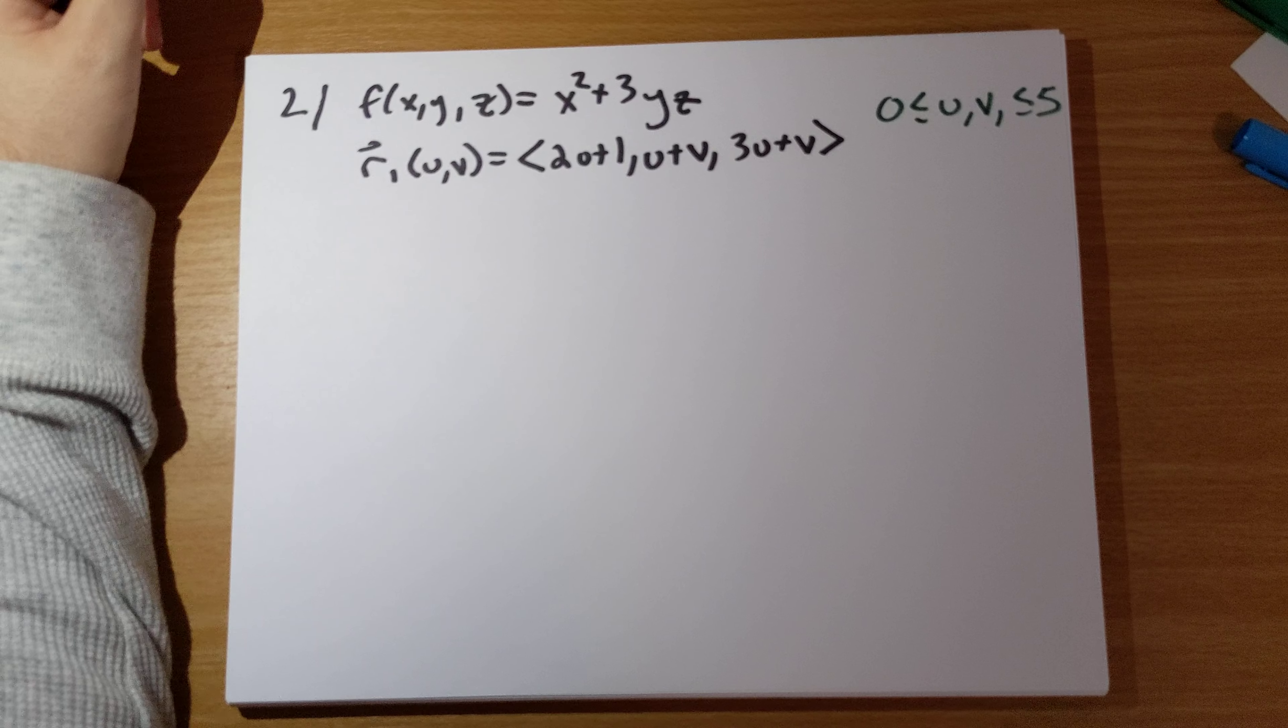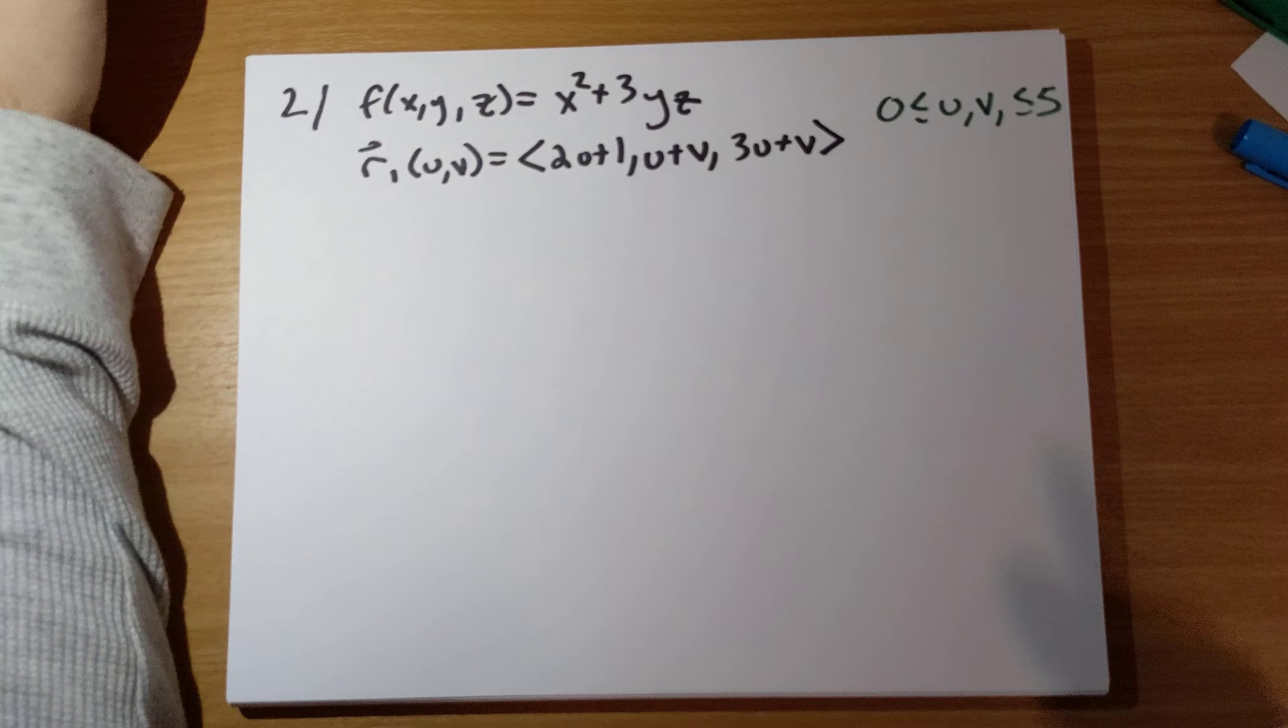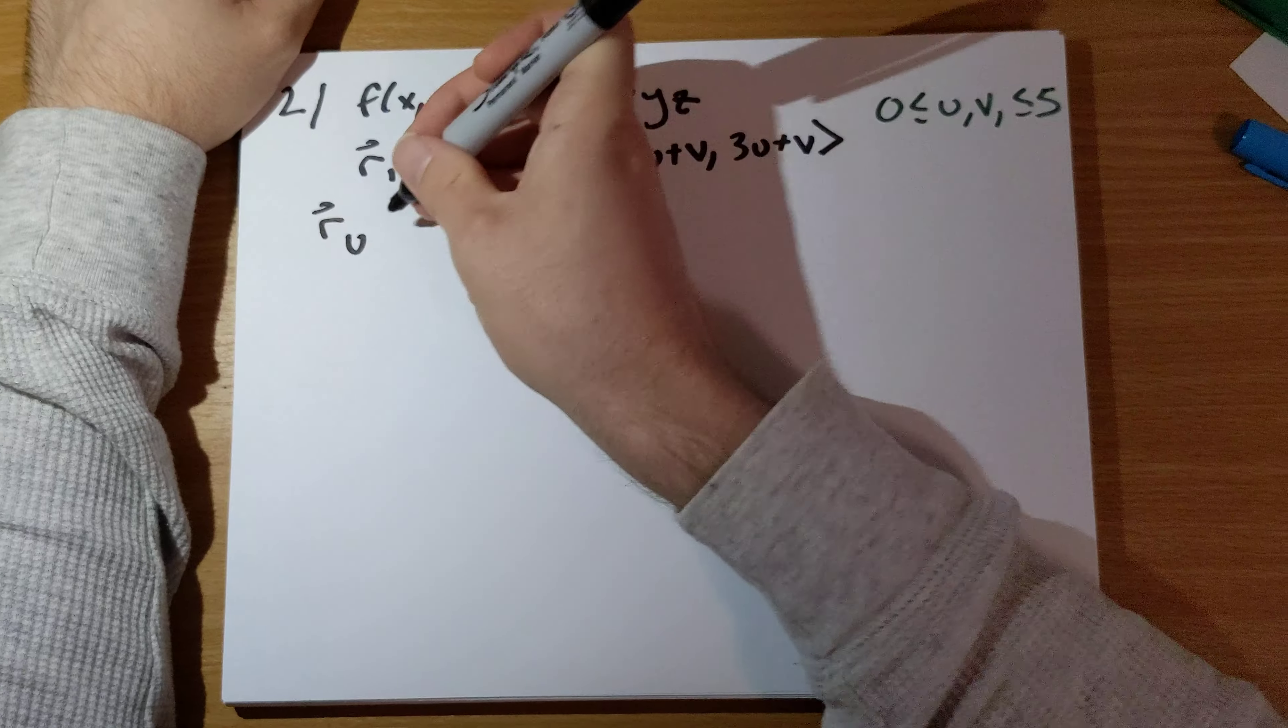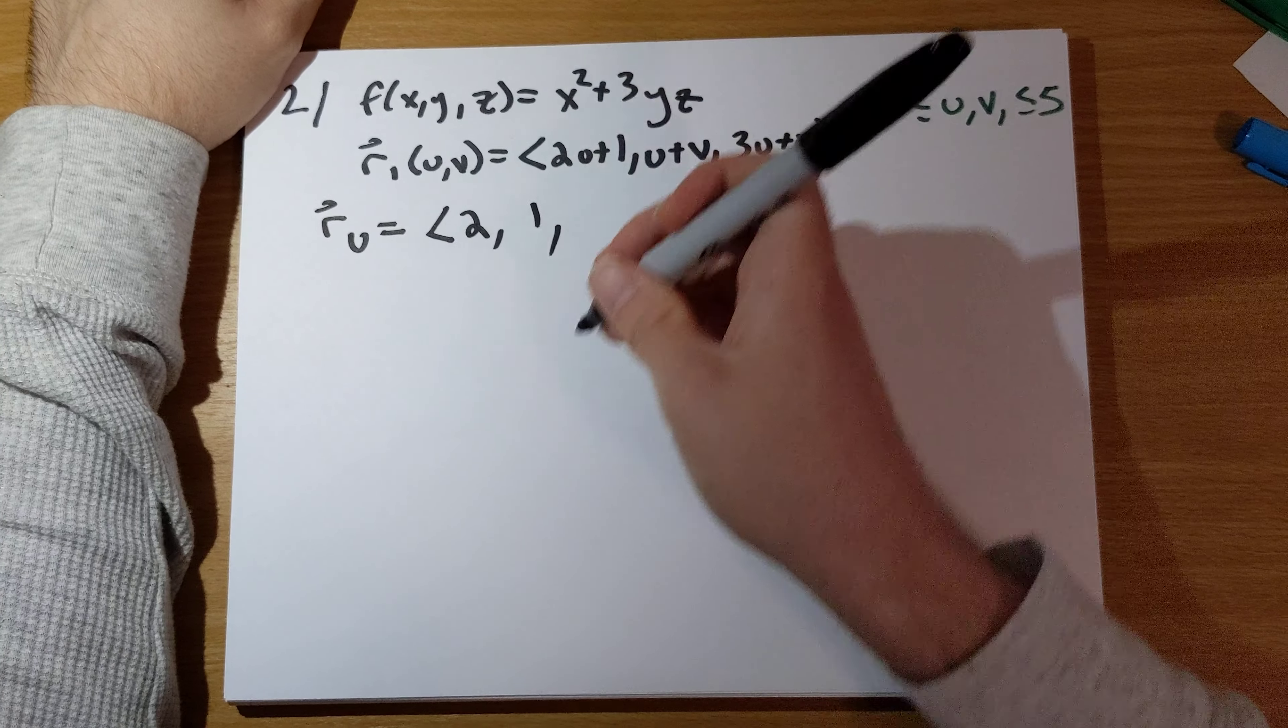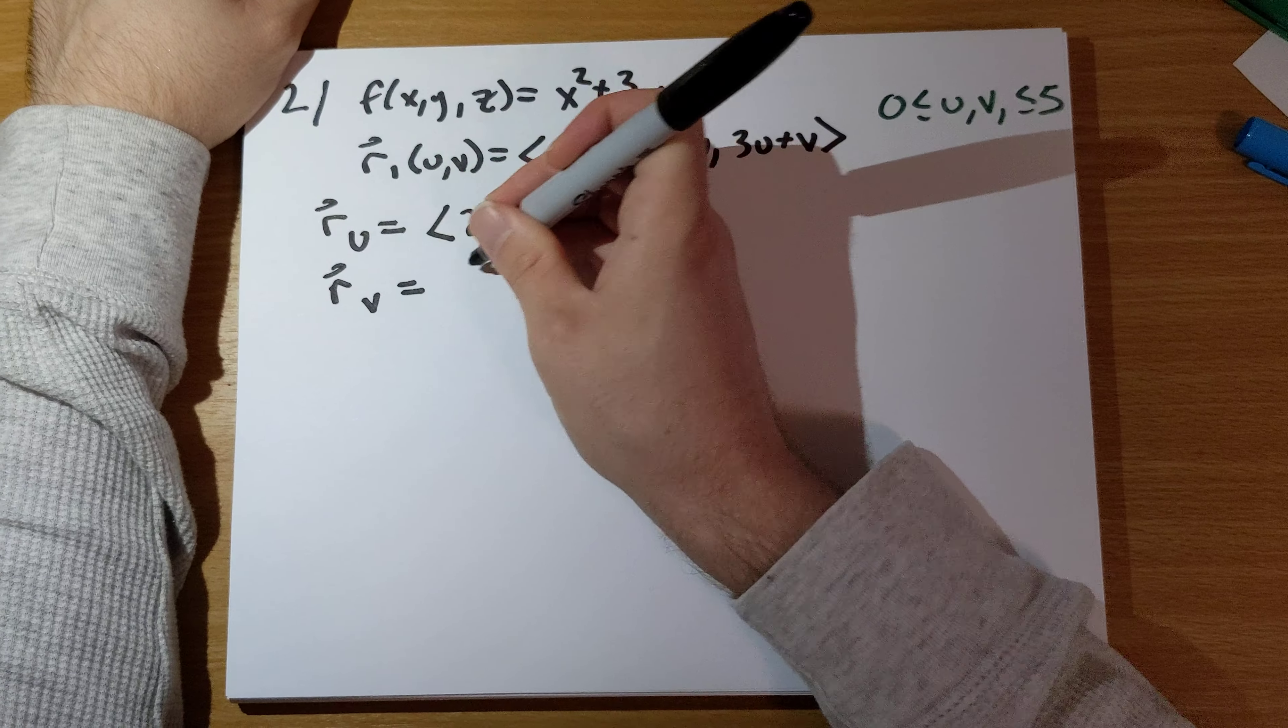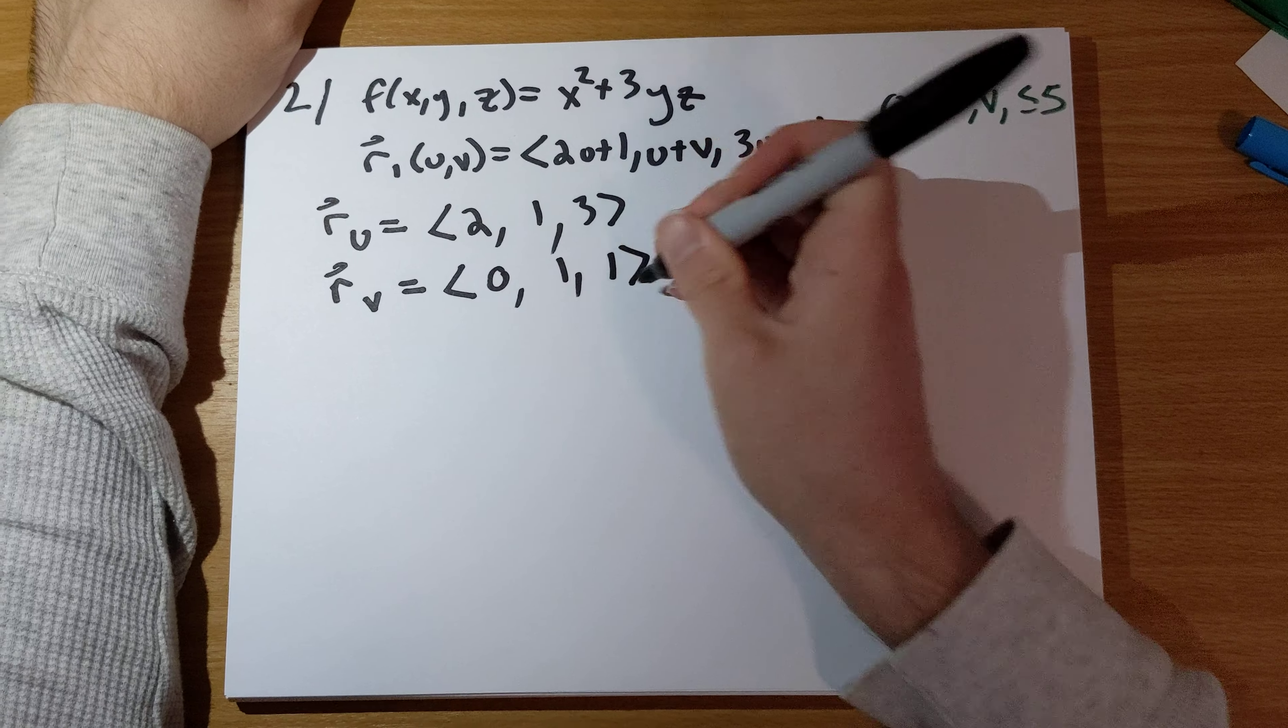Number 1 is that we need to do partial derivatives and a cross product of those. The partial derivative of this with respect to u is going to be 2, 1, 3. The partial derivative of this with respect to v is going to be 0, 1, 1.